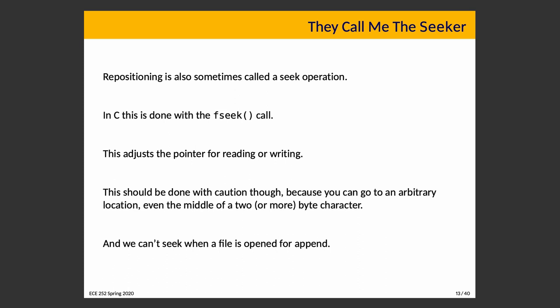Repositioning is also called a seek operation, and in C this is done with the fseek system call, which adjusts the pointer for reading and writing. You have to be careful, as it is possible to reposition to an invalid place. The idea is that after reading a thousand bytes, if you want to advance without reading you use fseek to advance — for example, 300 bytes — which is nicer than reading those 300 bytes and ignoring them.